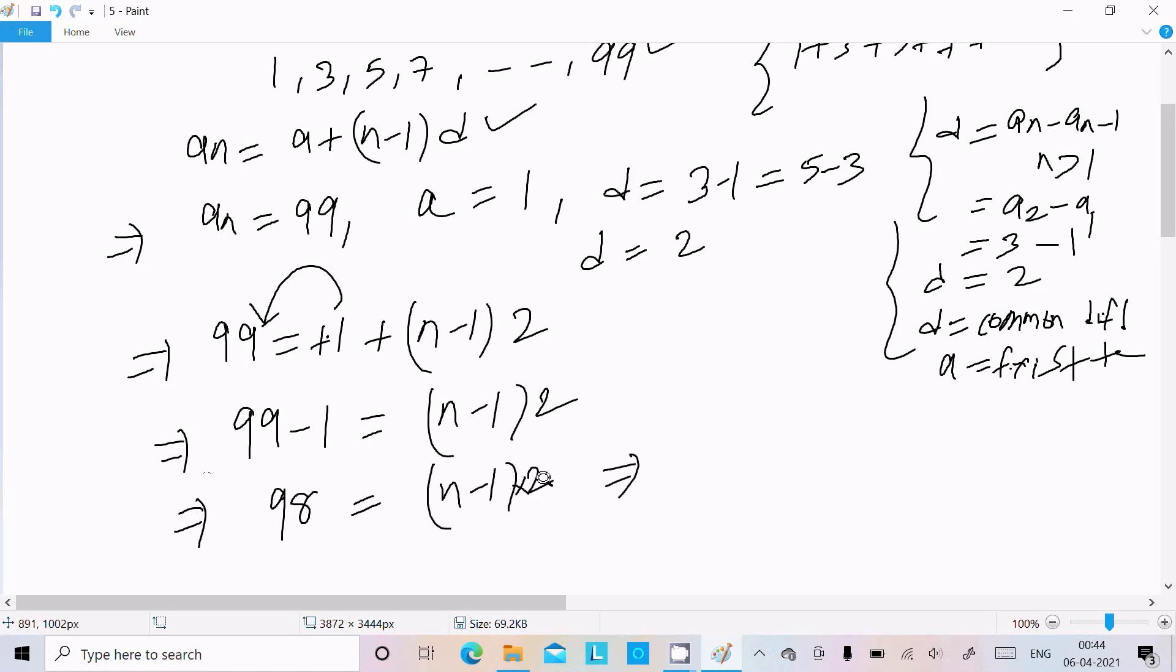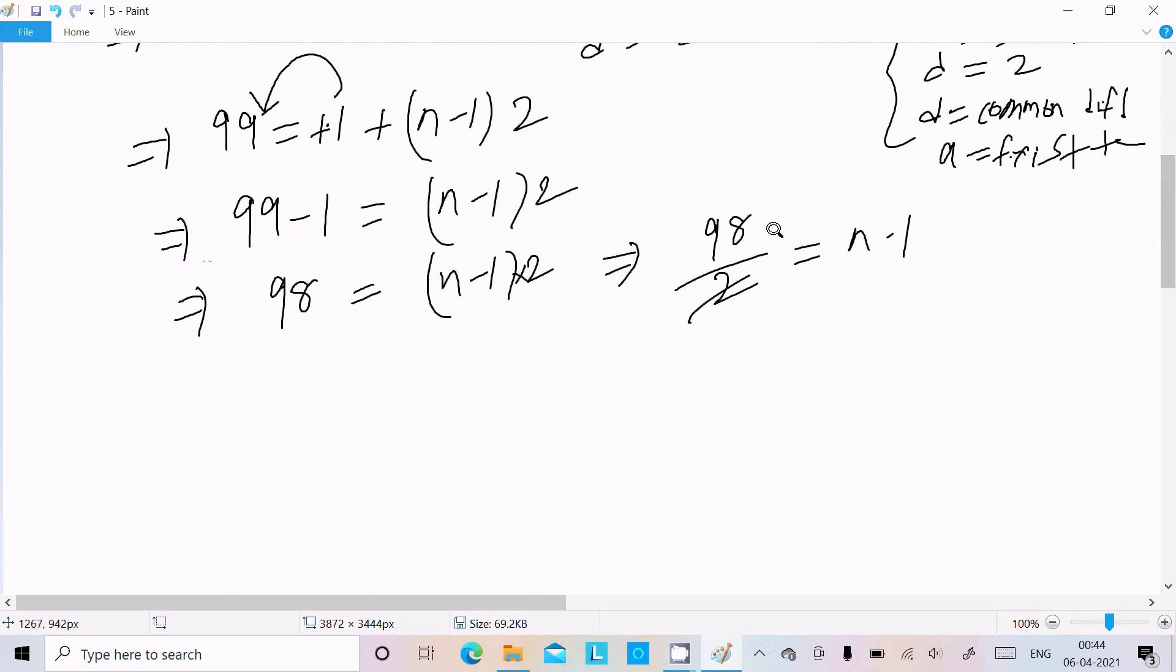Dividing both sides: 98 ÷ 2 gives us n - 1. This simplifies to 49.